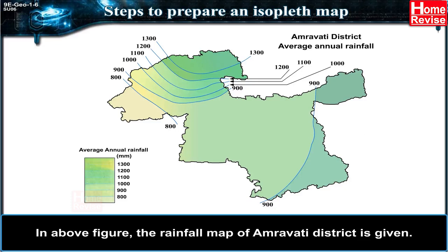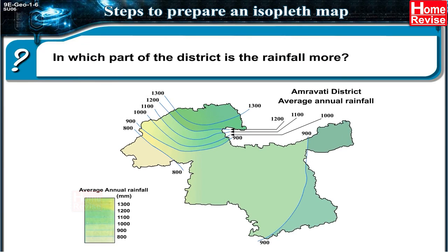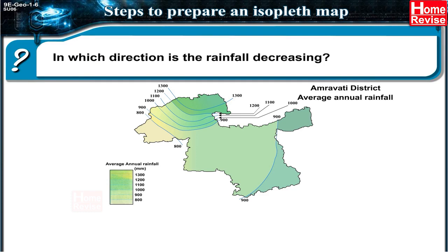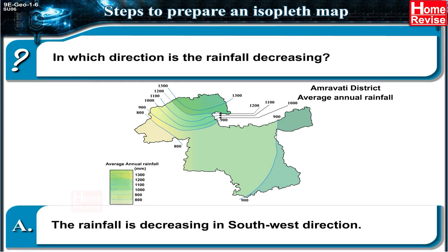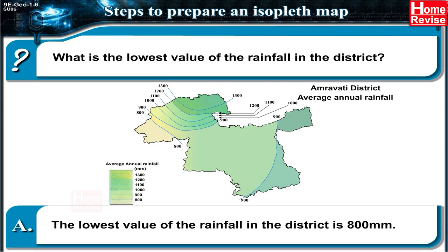We get an idea of the natural trend of the distribution of the variable from this map. In the figure above, the rainfall map of Amravati district is given. Questions and answers: Rainfall is more in the north side of the district. Rainfall is decreasing in the southwest direction. The lowest value of rainfall in the district is 800 millimeters.